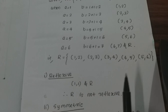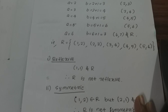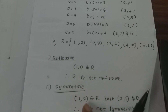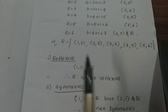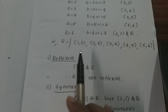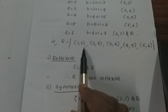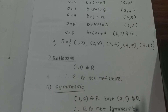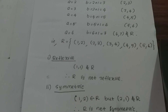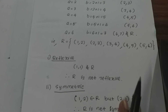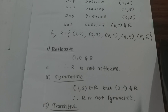Now we check symmetric. We have (1, 2) belongs to R. But (2, 1) does not belong to R, so R is not symmetric.